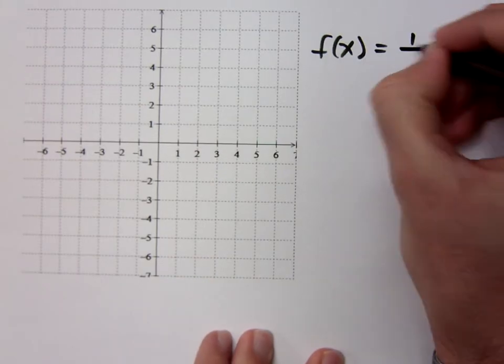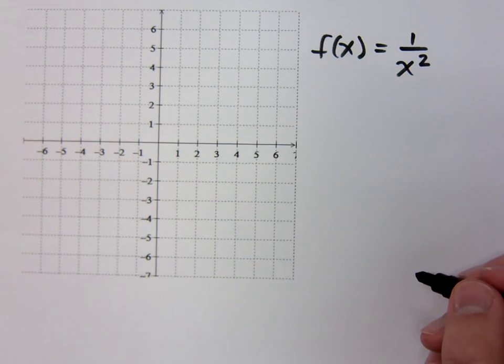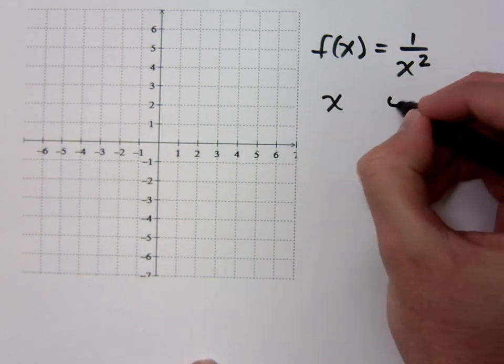Let's look at another basic rational function, which is 1 over x squared. This guy is going to behave just a little bit differently than we saw for 1 over x, so let's make a t-table of values.